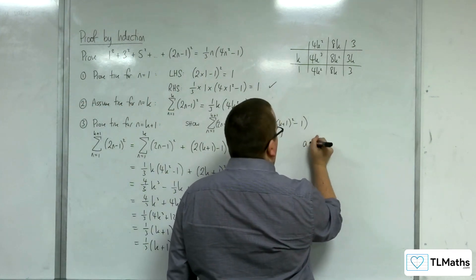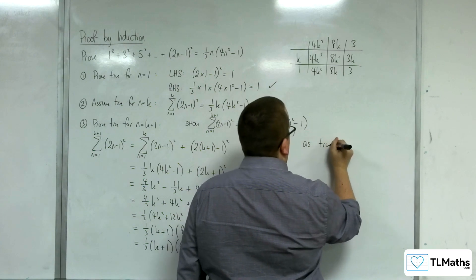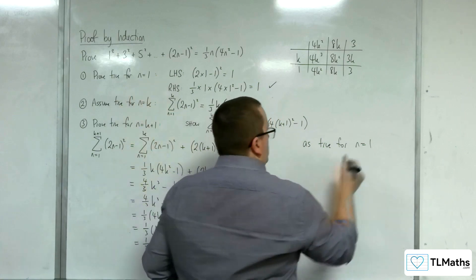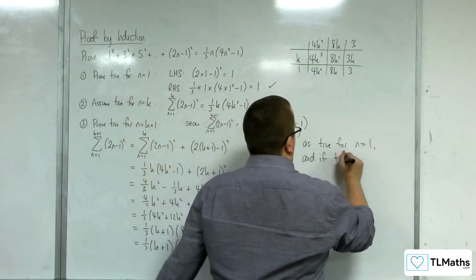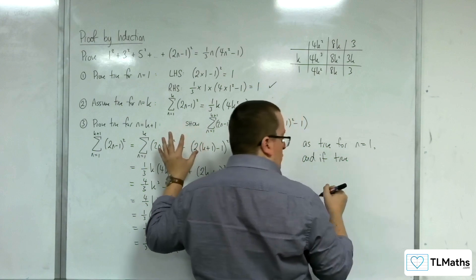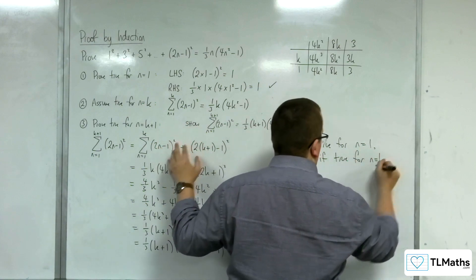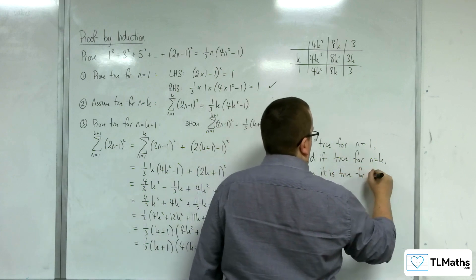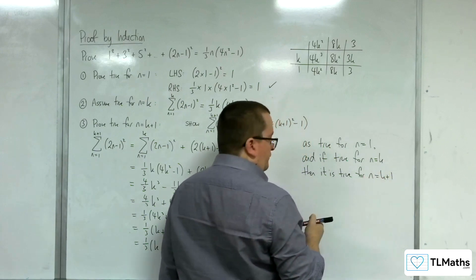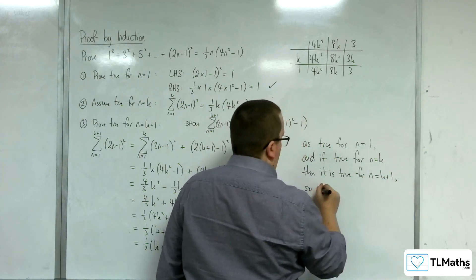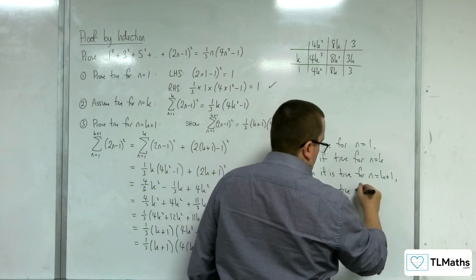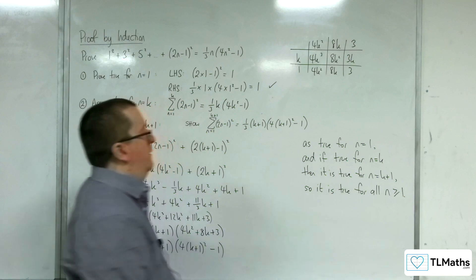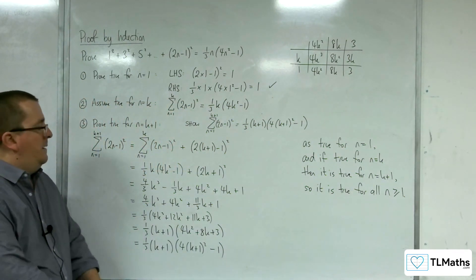So as it is true for n equals 1, we show that it was true here in stage 1. And if true, so stage 2, assuming it's true for n equals k. Then we show that it is true for n equals k plus 1. So it is true for all integers n greater than or equal to 1. Okay. And so that completes the proof.